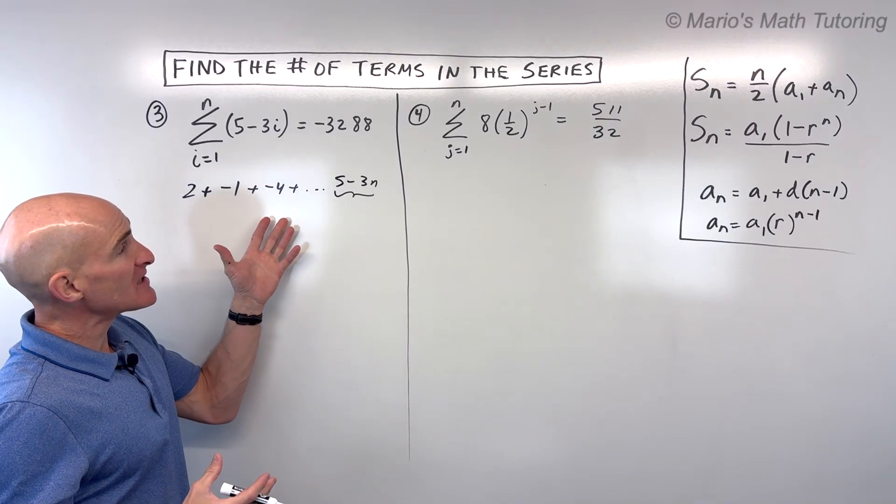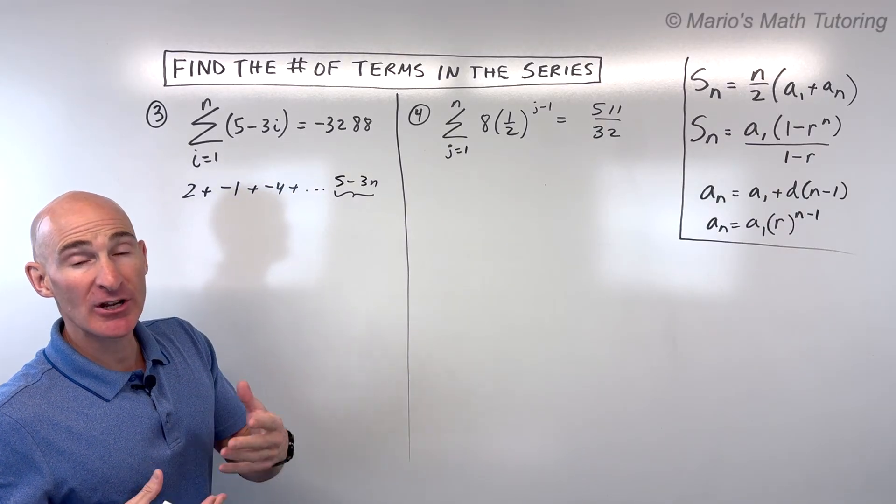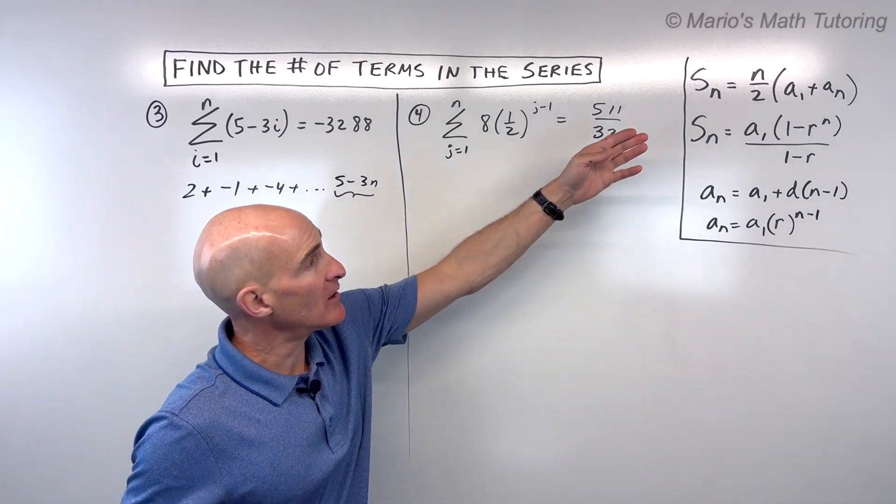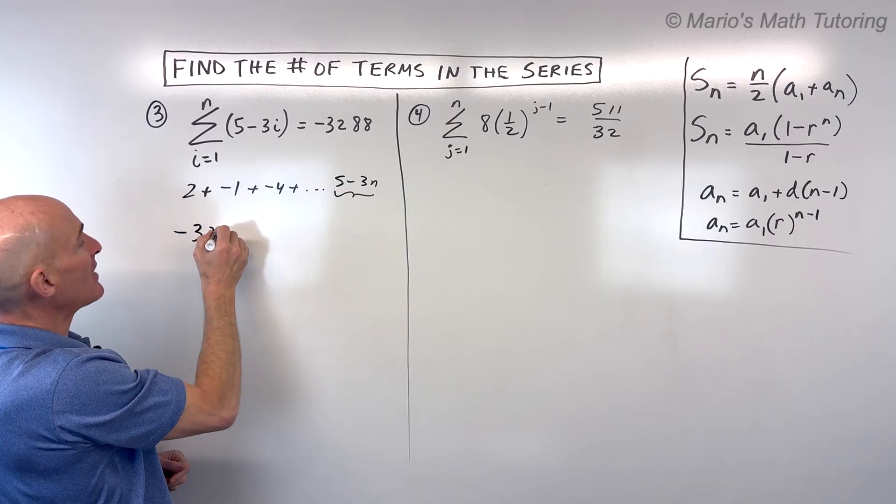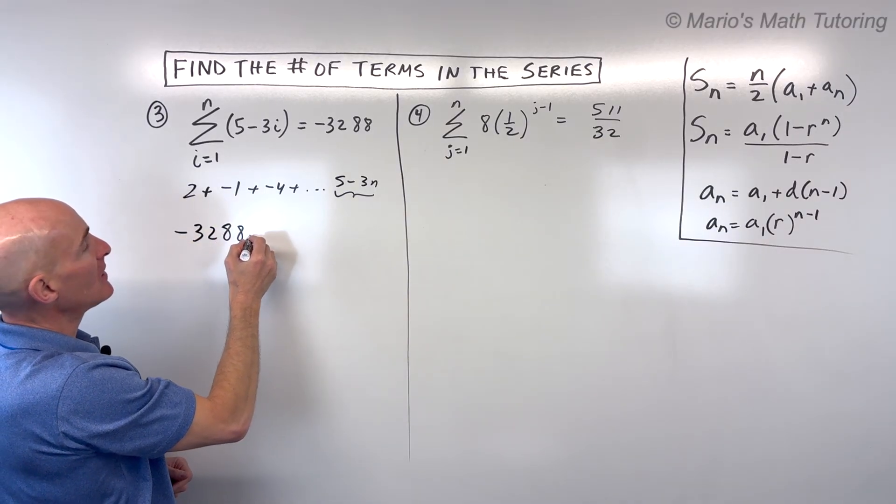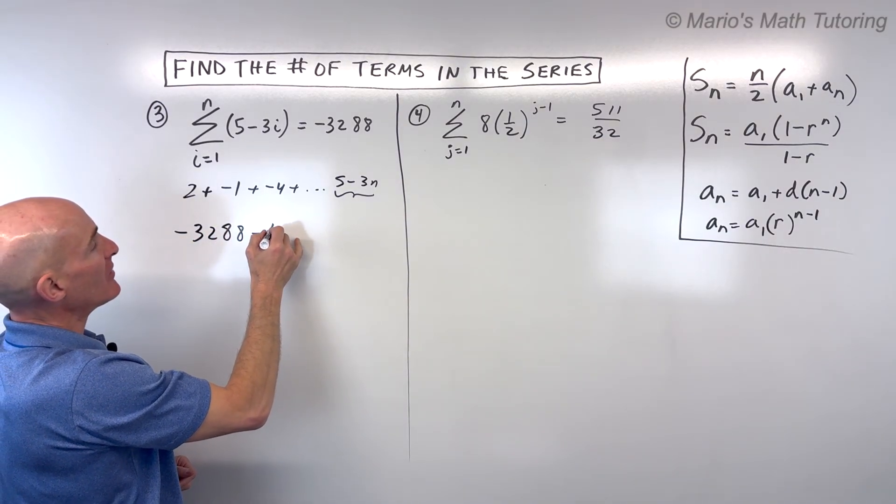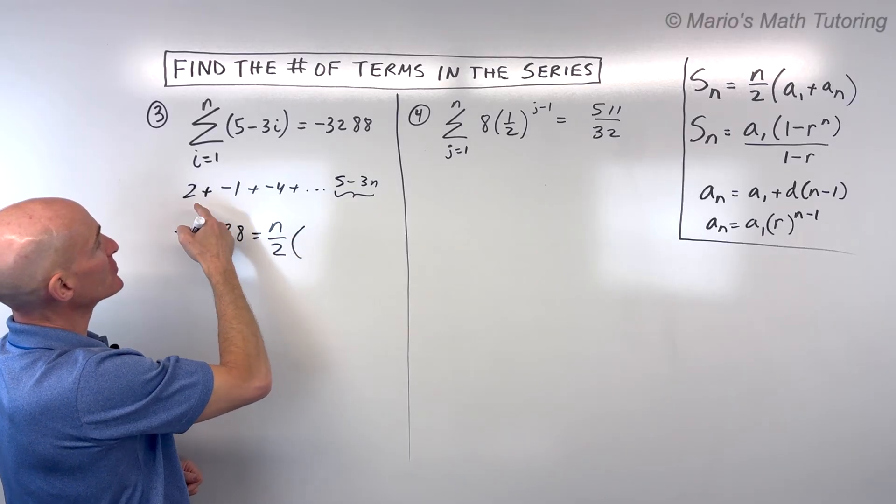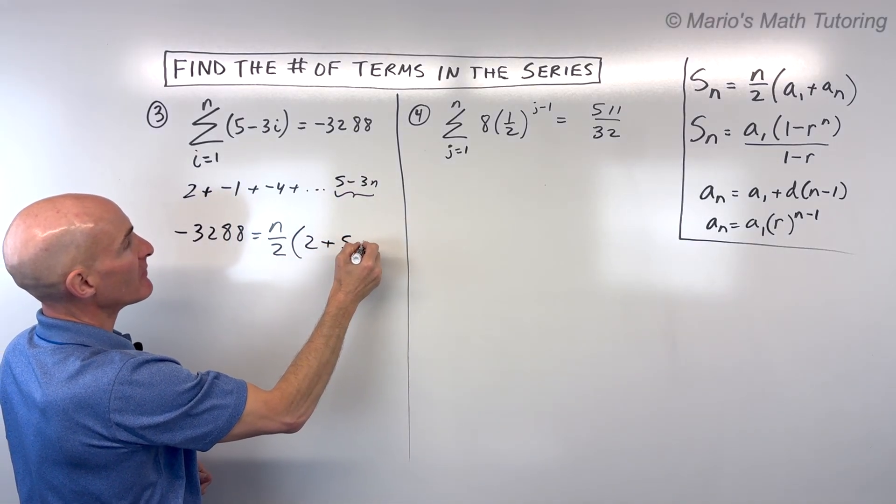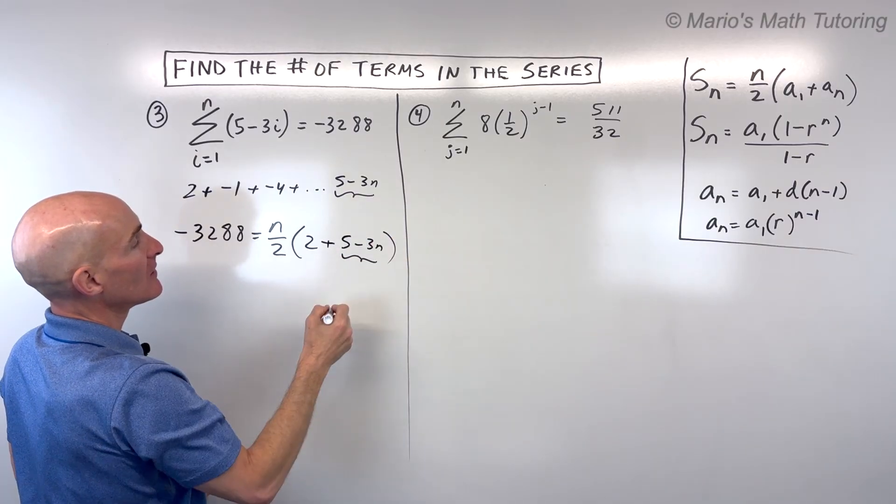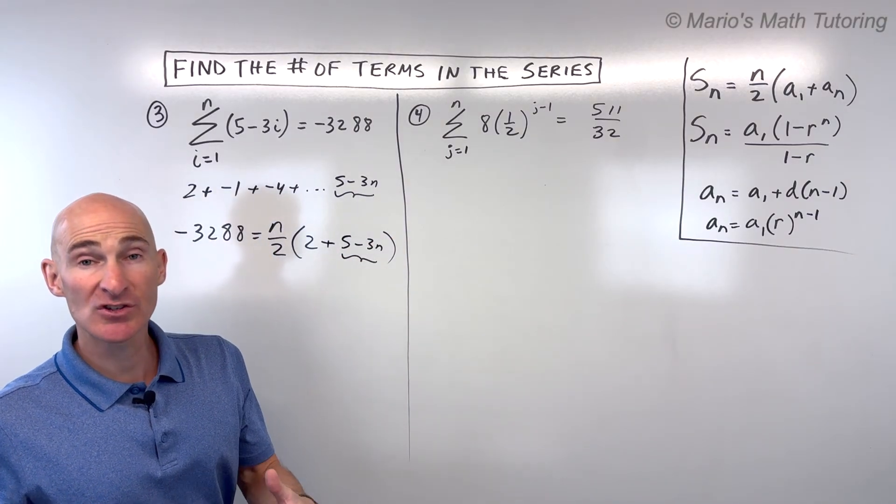But notice we're subtracting 3 each time, which makes sense because this is like the slope, like negative 3 when you write the equation of a line. So I know this is an arithmetic series. I just have to figure out how many terms. So let's use our arithmetic sum formula, this top one here. They give us the sum is negative 3,288 equals n, the number of terms, which we don't know, the first term, which is 2, the last term, which is 5 minus 3n. So we've got everything we need, we just have to solve for n.